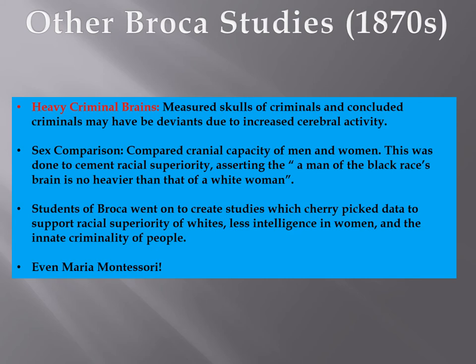Other Broca studies include Heavy Criminal Brains, where he measured skulls of criminals and concluded criminals may have been deviants due to increased cerebral activity. He also conducted sex comparison studies comparing cranial capacity of men and women, asserting that a man of the black race's brain is no heavier than that of a white woman — during a time when women were placed on a lower scale than white men. His students went on to create studies cherry-picking data to support racial superiority of whites, lesser intelligence in women, and innate criminality of certain peoples.